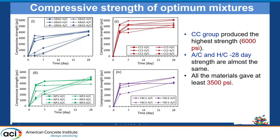This plot summarizes all strength values at 3, 7, and 28 days for all materials at optimum strength. Solid lines represent heat-cured strength and dashed lines represent ambient-cured strength. The calcined clay group produced the highest strength — around 6,000 psi — and the ambient-cured and heat-cured strengths at 28 days were almost the same. All materials gave at least 3,000 psi strength.